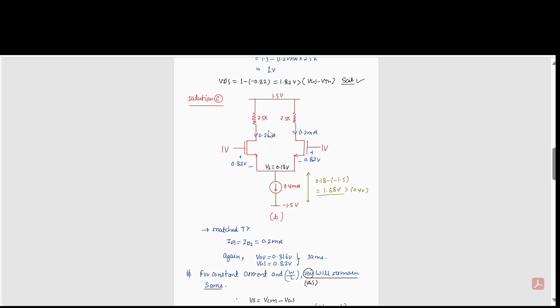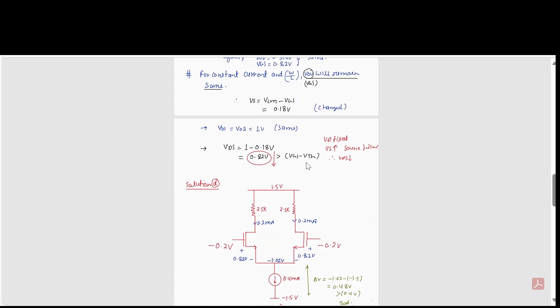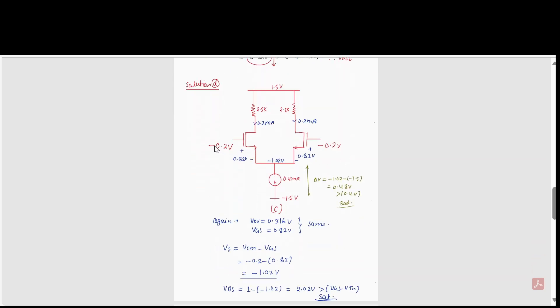The drain voltage remains 1 volt since the current and drop across the resistor are the same. VDS = 1 − 0.18 = 0.82 volts, which is greater than VGS − Vth, confirming the transistor is in saturation.